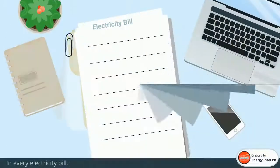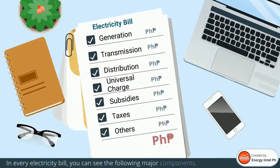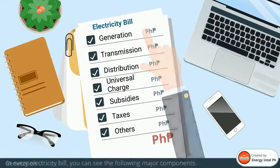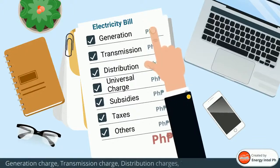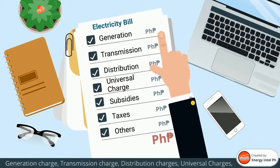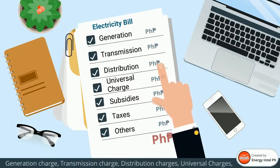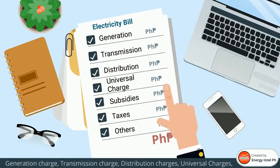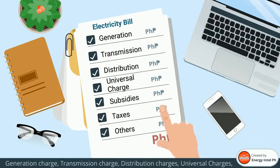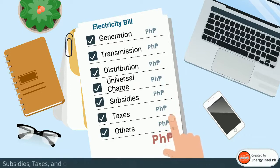In every electricity bill, you can see the following major components: generation charge, transmission charge, distribution charges, universal charges, subsidies, taxes, and other charges.